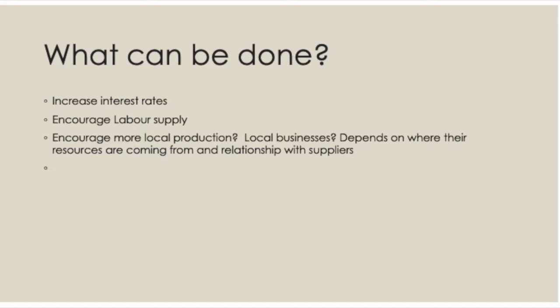Another option is to encourage more labour supply — for example, government intervention such as making more nursery hours available for free and providing childcare support would encourage more women to go to work. Therefore we can ramp up production of goods and services and help prices come down. We could also encourage more local production — some people argue that supporting local businesses should see production increase and prices come down. That obviously depends on where those local businesses get their resources from; if they're still importing from abroad they'll face the same problems, but if they're producing locally using local materials it might be helpful. It also depends on the relationship with their suppliers and how much power they have over them.